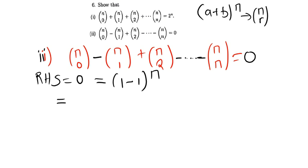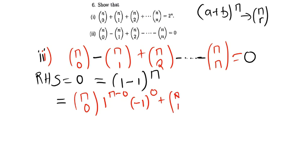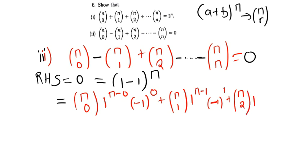Proceeding to the expansion: the first term is n choose 0, times 1^(n−0), times (−1)^0, plus n choose 1, times 1^(n−1), times (−1)^1, plus n choose 2, times 1^(n−2), times (−1)^2, and so on.